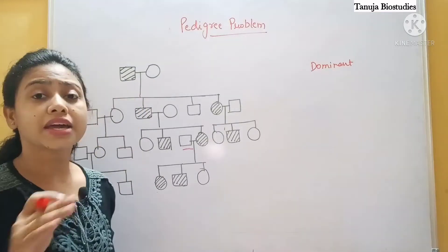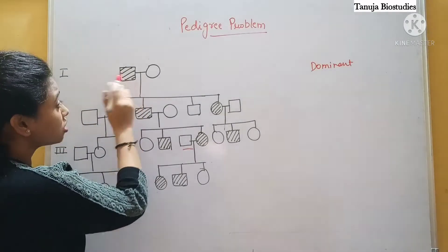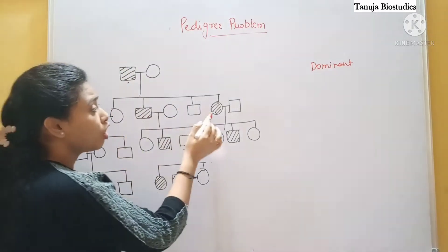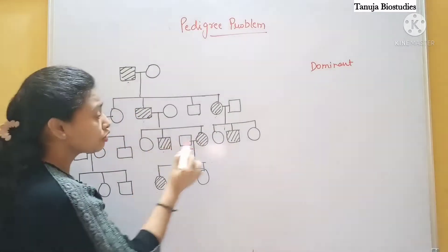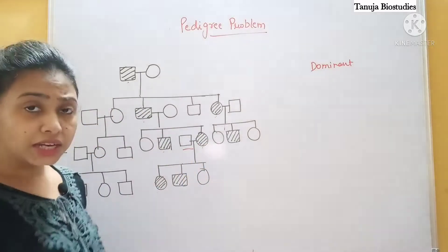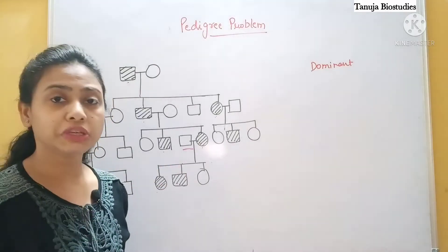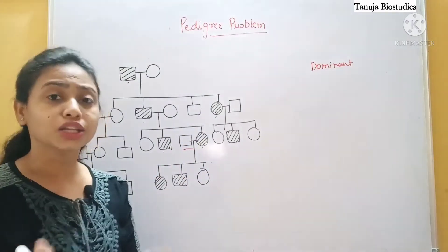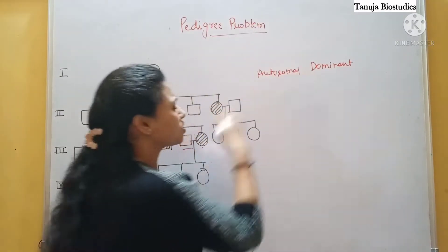Now we have to determine whether this is an X-linked trait or an autosomal trait. If you observe carefully, male traits are going to both males and females. Here female traits are also going to males. Both males and females are affected. So the trait is not particularly affecting males or particularly females - it is equally affecting both. As I told you, if it is equally affecting both sexes, then it will be autosomal.